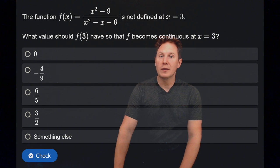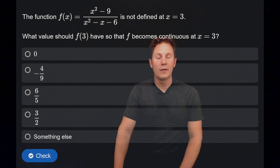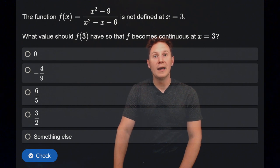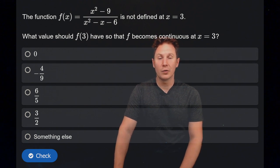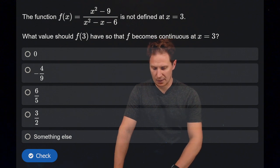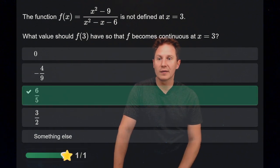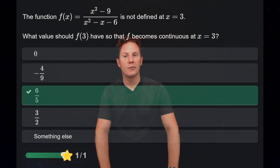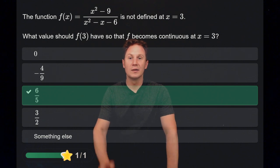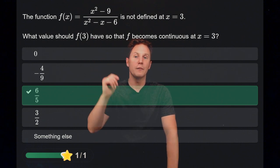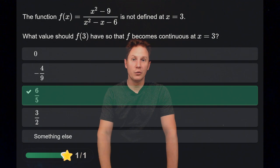Here is a function f that is not defined at x equals three. What should the value of f be at x equals three so that it becomes continuous there? The answer is six over five, and you can get this by simply computing the limit as x approaches three of f of x using factoring.